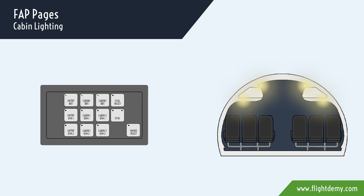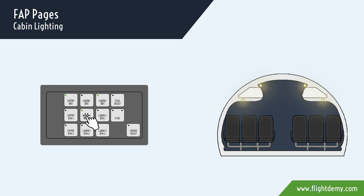The AAP controls the illumination of its entry area and of the cabin zone. The push buttons are arranged in two columns for cabin zone and entry area illumination. The LED on the push button illuminates when the push button is pushed and activated. To switch off the cabin zone lights, push the active button a second time.